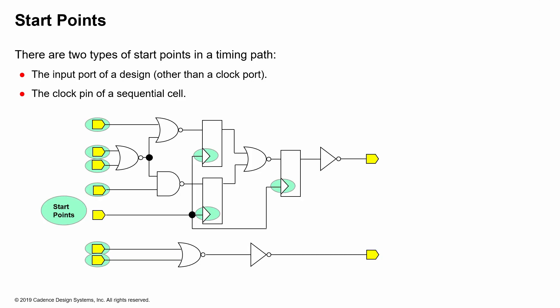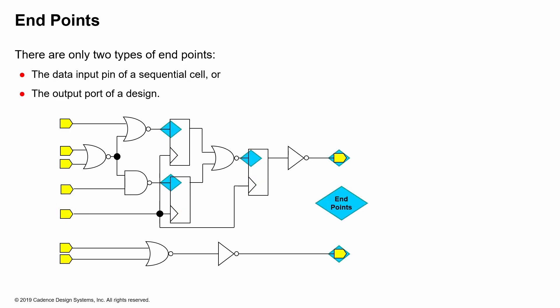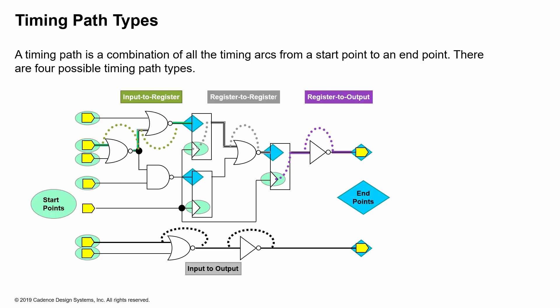There are two types of start points in a timing path. The input port of a design — anything other than a clock port — is considered a start point. The clock pin of a sequential cell is also considered a start point. There are also two types of end points: the data input of a sequential cell, and the output port of a design.